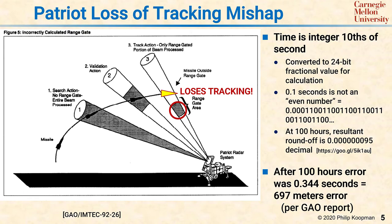A third of a second is almost 700 meters. The result was, after 100 hours, the range gate computation was off enough that it was tracking the wrong pulse and thought the missile was in a different location than it really was. Thus, when the interceptor was shot, it was shooting at the wrong location — shooting down by the red circle when the real missile was further away.